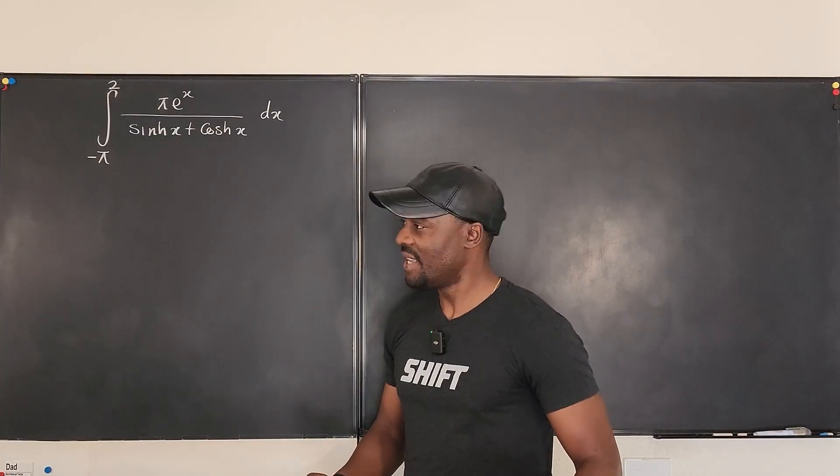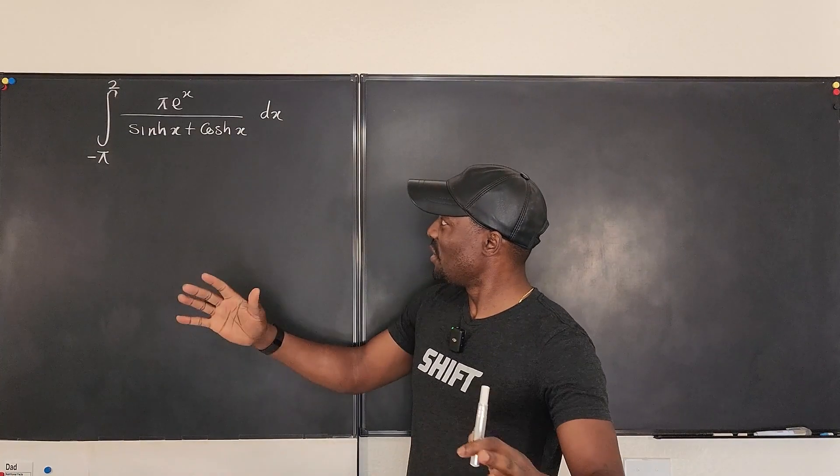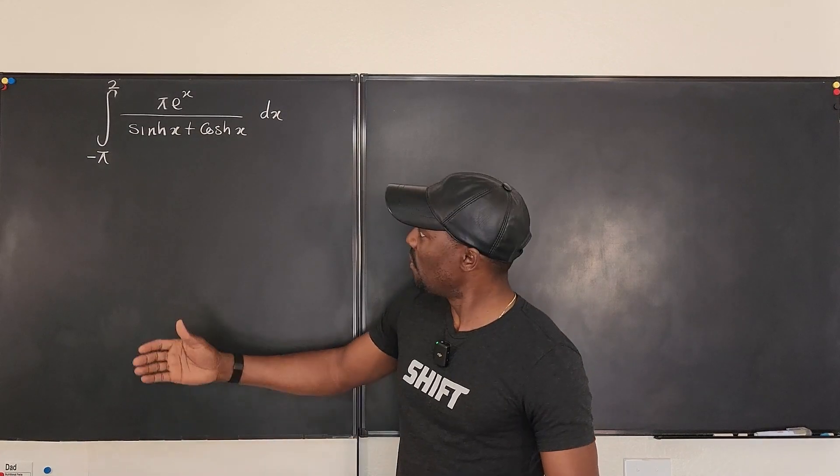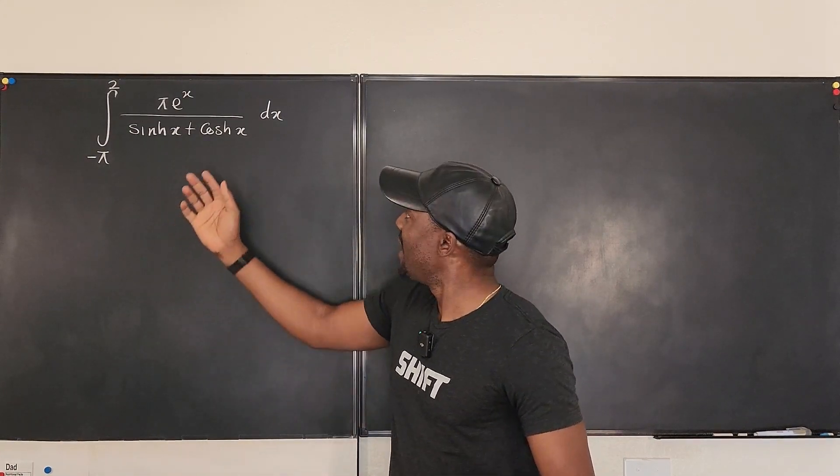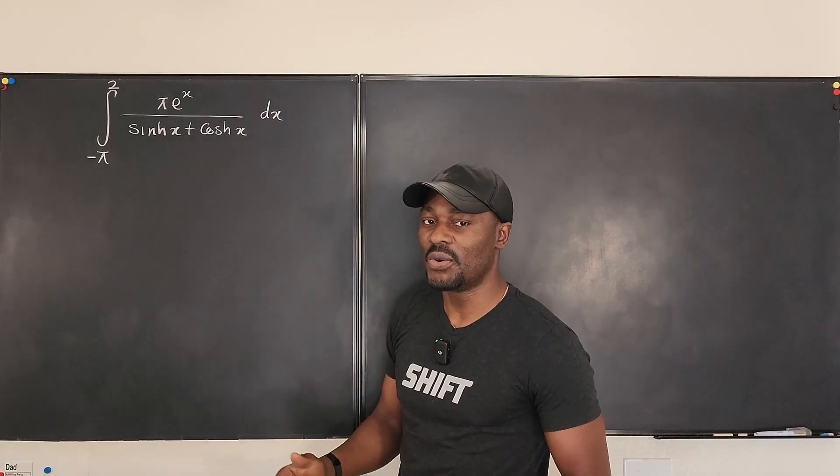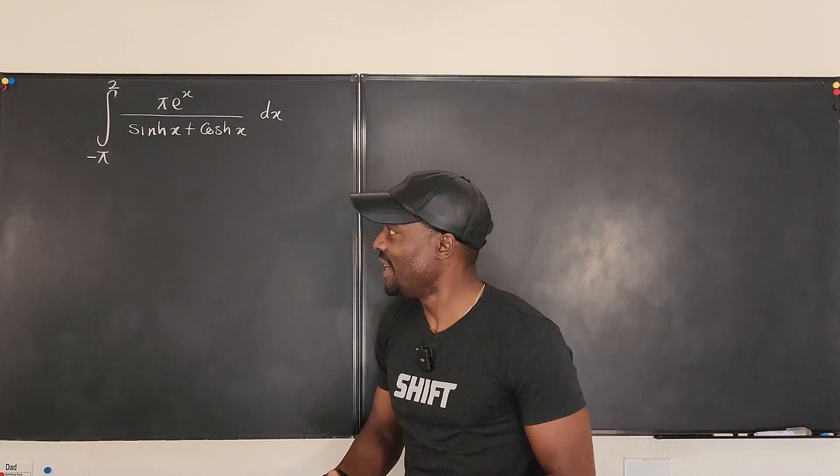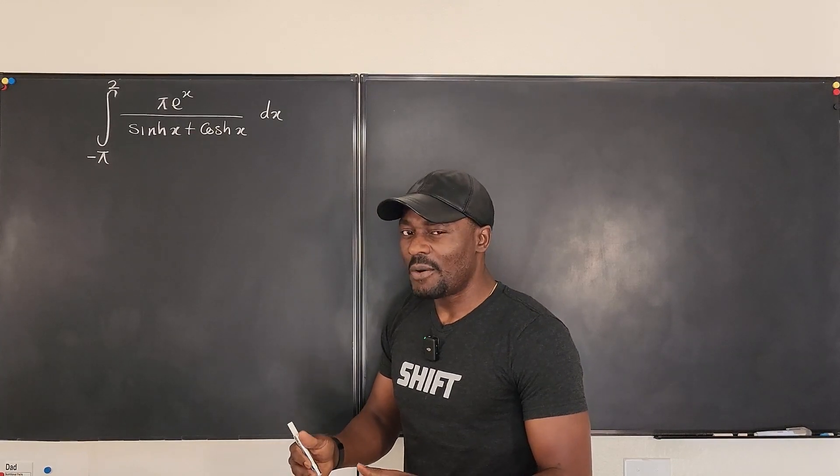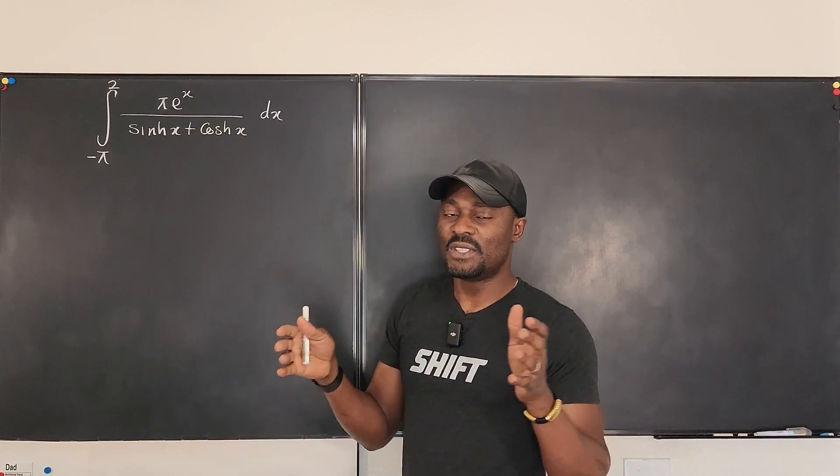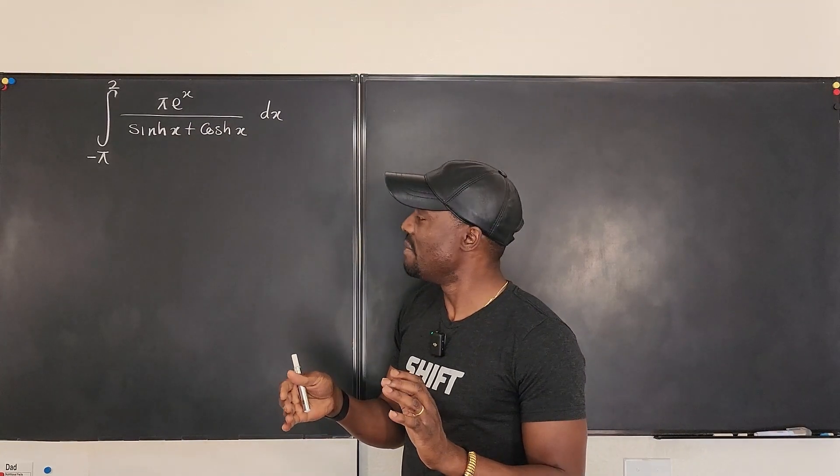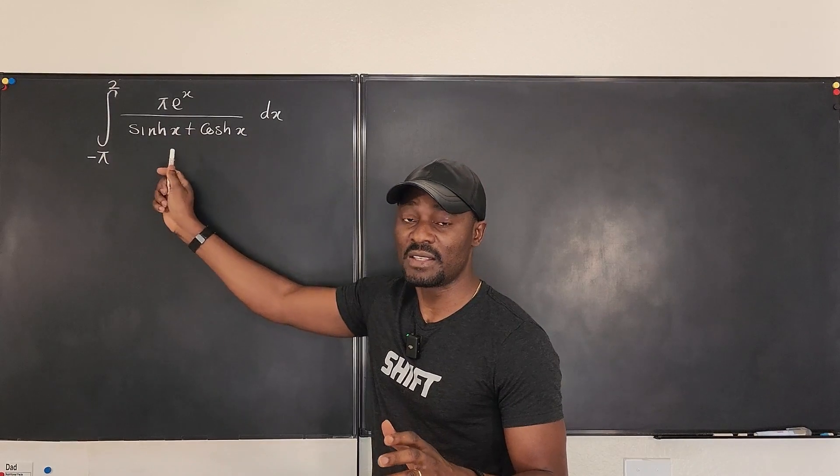The first thing you're going to notice is that everything else looks familiar except for the hyperbolic sine, which I like to call sinh(x), and hyperbolic cosine, which I like to call cosh(x). We really don't work with this all the time, but if you're taking calculus two, you would know that you have to know how to write this.